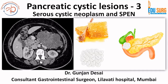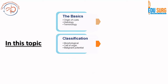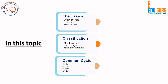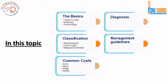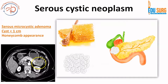Hello everyone and welcome back to EduSearch Clinics. I am Dr. Gunjan Desai and today we are going to continue our discussion on pancreatic cystic lesions and we are going to see some common cystic lesions. We have seen the basics, the origin of the cysts and the histology and the classification and morphological terms. Today we are going to discuss two commonly seen pancreatic cystic neoplasms: the serous cystic neoplasm and SPEN. In the upcoming talks we will discuss mucinous neoplasms and the guidelines and algorithms.